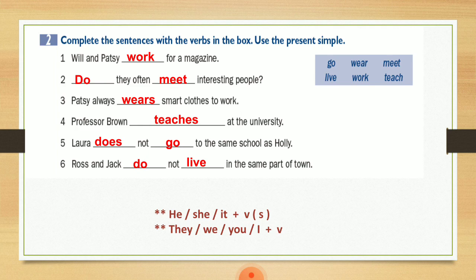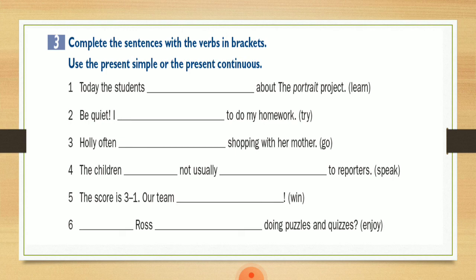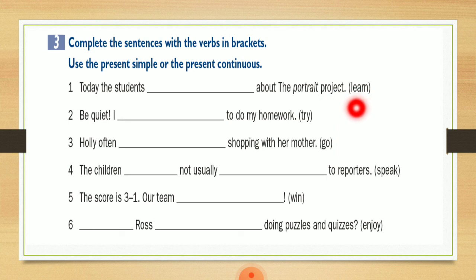Let's move to exercise number three: complete the sentences with the verbs in brackets — use the present simple or the present continuous. هون لازم أختار إما present simple أو present continuous حسب معنى الجملة وزي ما تعلمنا باستخداماتهم التنين. Number one: Today the students about the portrait project، وفي عندي الفعل learn. بما إنه حدد لي إنه today فعندي هون temporary state — حالة مؤقتة. يعني هم اليوم فقط بيتعلموا عن الـ portrait project. فرح أستخدم present continuous: are مع الفعل ing — learning. So today the students are learning about the portrait project.